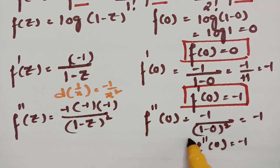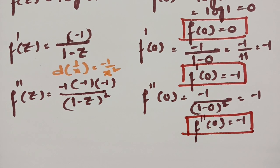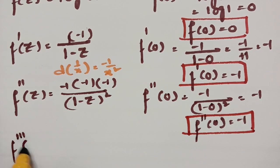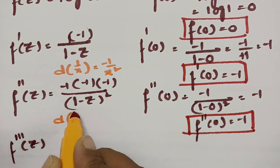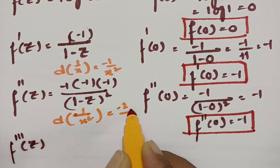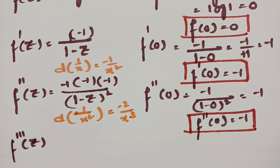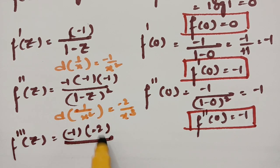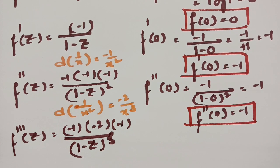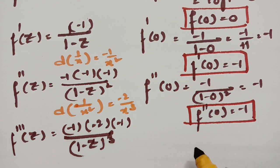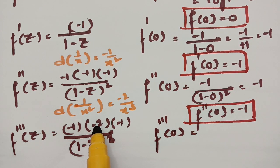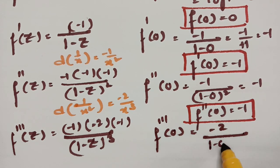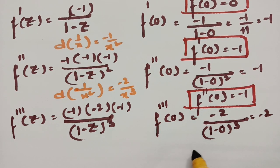Next, we find f'''(0) by differentiating f''(z) = -1/(1 - z)². The derivative of 1/x² is -2/x³. Applying the chain rule with the factor -1 from (1 - z), and accounting for the sign from f'', we get f'''(z) = -2/(1 - z)³. Substituting z = 0 gives f'''(0) = -2.